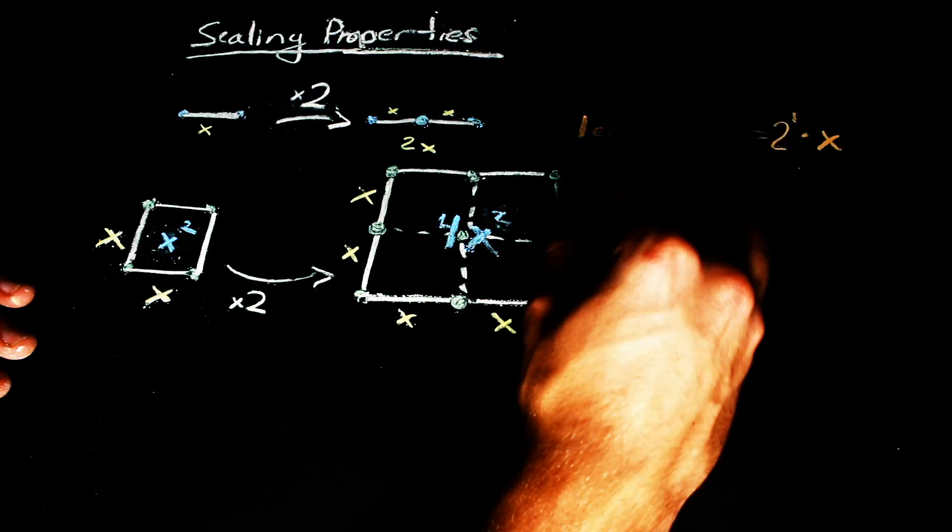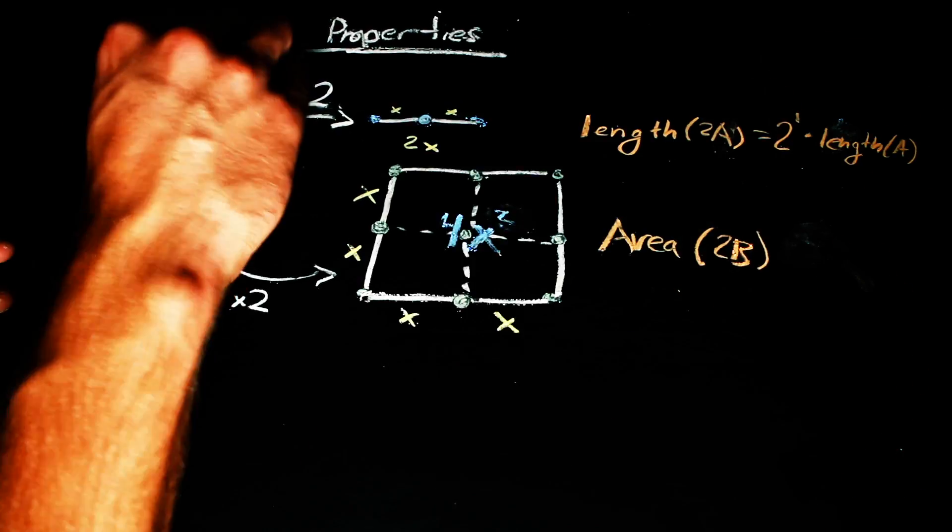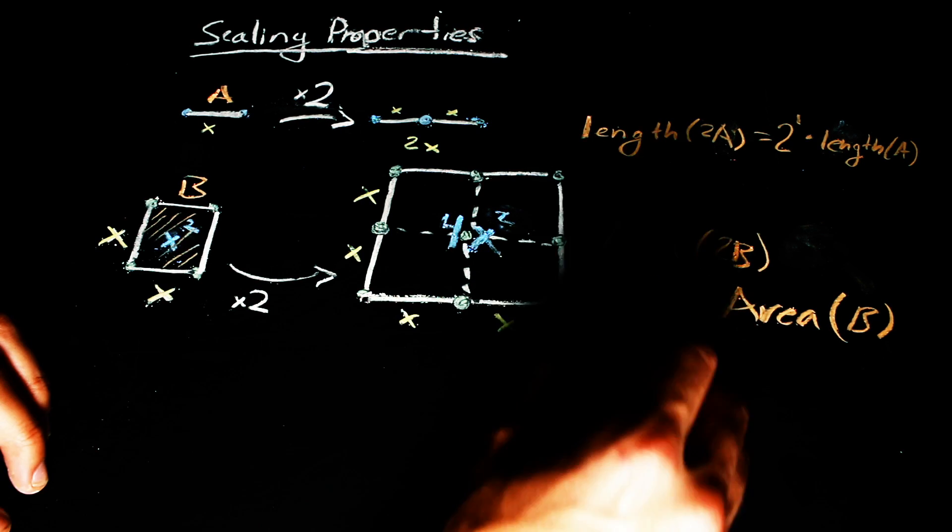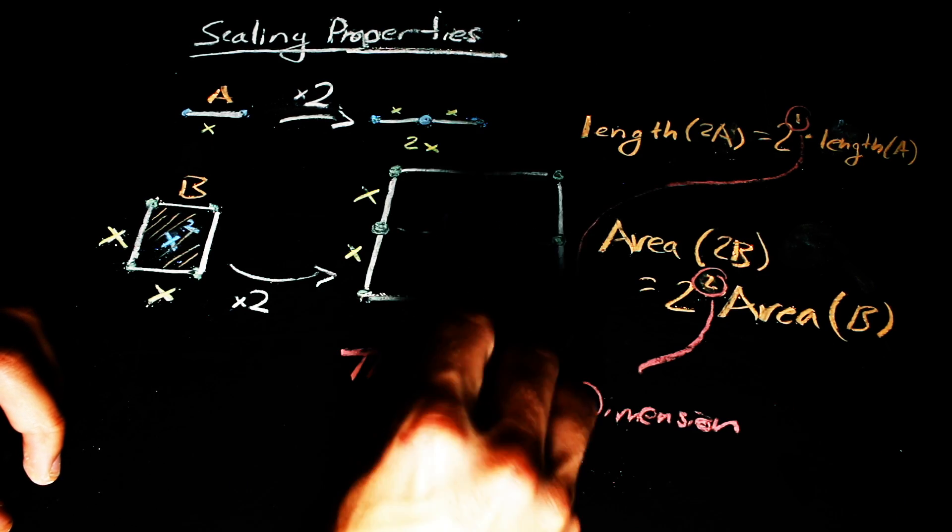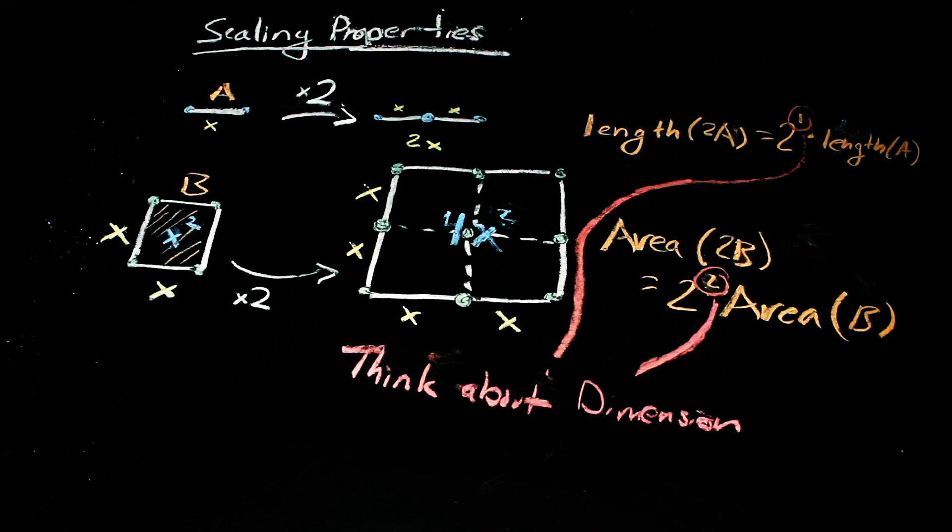When you scale by a factor, the number of copies of the object is the scale factor to the dimension of your set. We'll make dimension a bit more formal in a minute, but the scaling property of sets is intimately related to our colloquial intuition for the dimension of a set or shape.